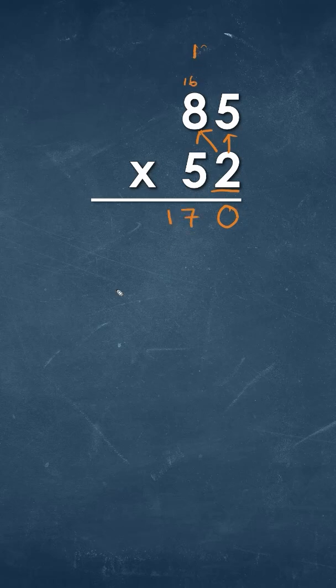Okay, then we add a 0, and that's just the trick. Now what we do is we multiply by this 5, so 5 times 5 is going to be 25. Now again we take that 2 that we have from 25, we put it up here. Okay, 5 times 8 is going to be 40.